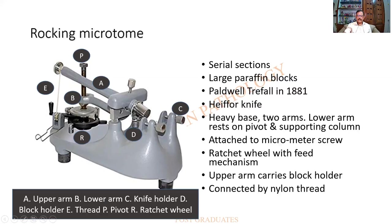C is the space for the knife. These parts are given in the legend below. This particular microtome is used for serial sections; large paraffin blocks could be cut. It was designed by Caldwell Travell in 1881, and the knife originally used was the heifer knife.